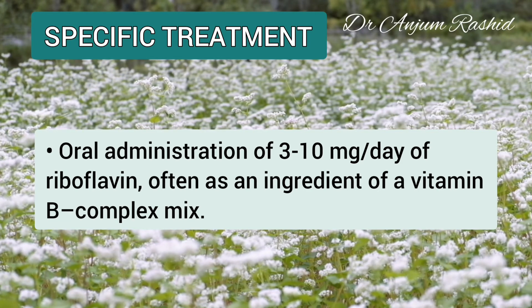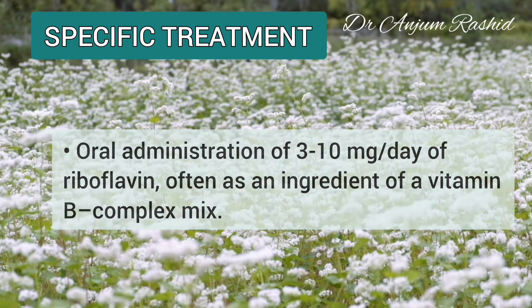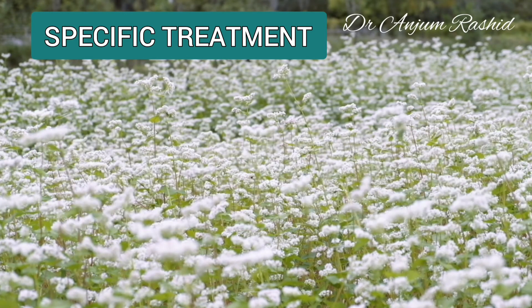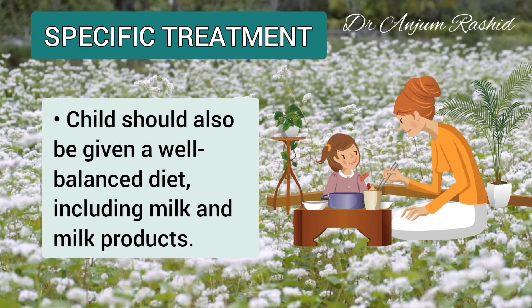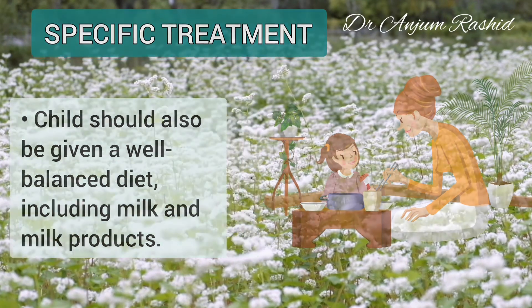The specific treatment of riboflavin deficiency is oral administration of 3 to 10 milligrams of riboflavin, often given as an ingredient of a vitamin B complex mixture. The child should also be given a well-balanced diet including milk and milk products.